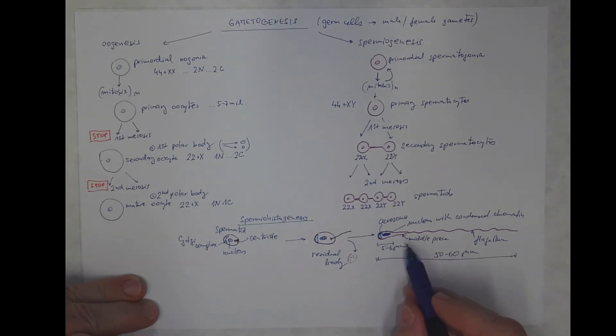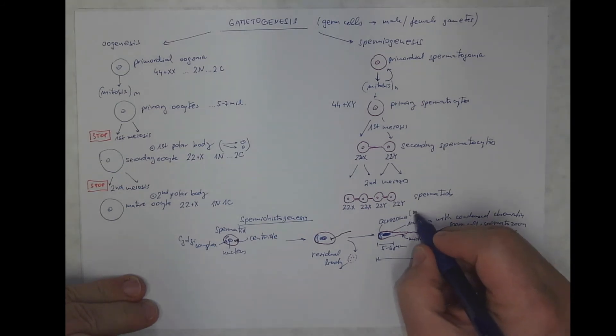And this is the mature form, called sperm cell, or from the Greek, spermatozoon. So, these are spermatozoa. The acrosome, as I mentioned, contains enzymes.